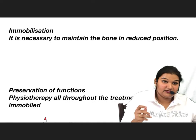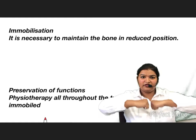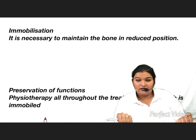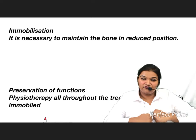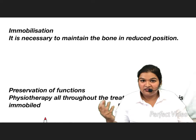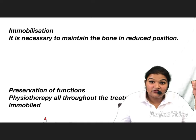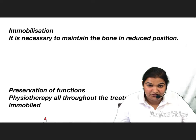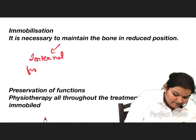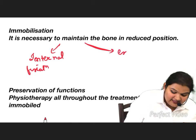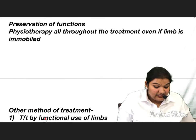Immobilization is necessary to maintain the reduced ends in a constant position. If the fracture is continuously moving, it cannot unite properly — there can be non-union or angulation, both of which are unacceptable. Methods of immobilization include internal fixation and external fixation.